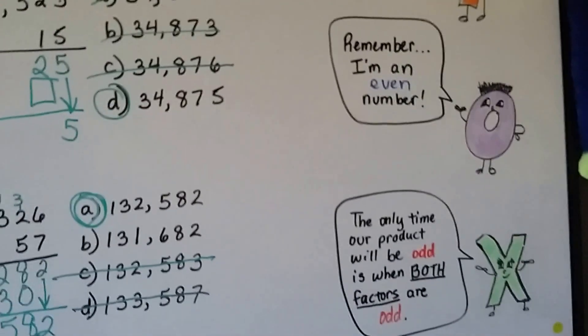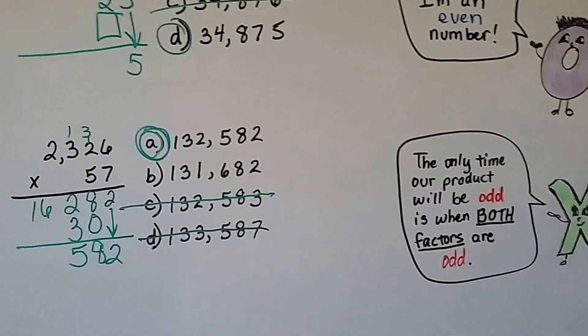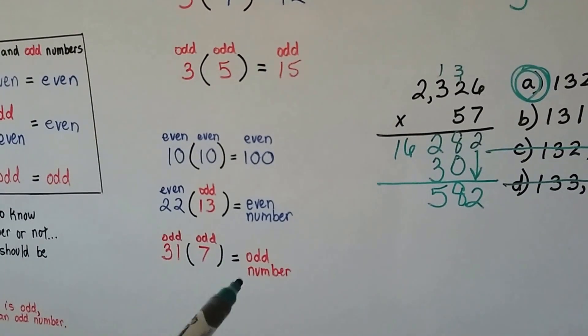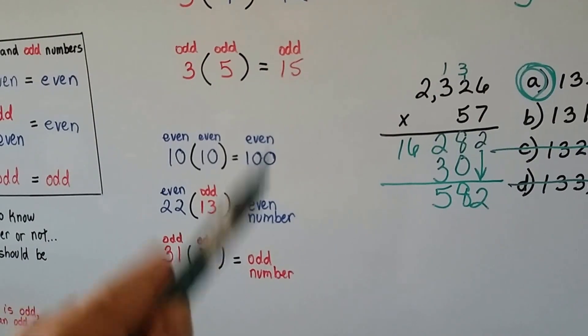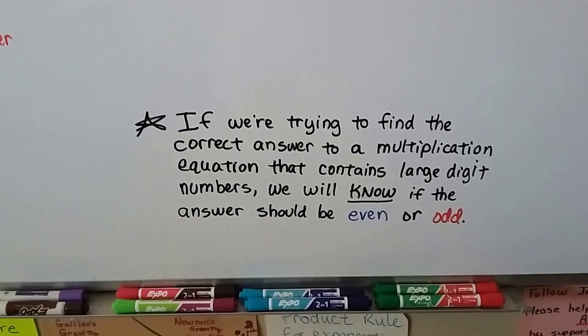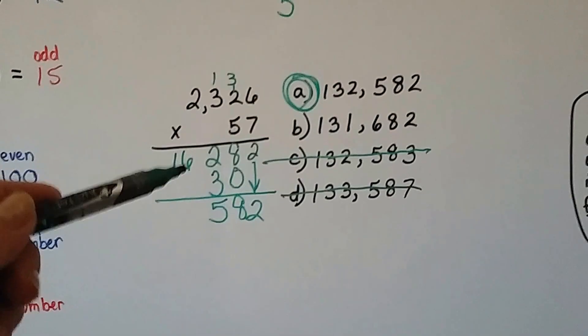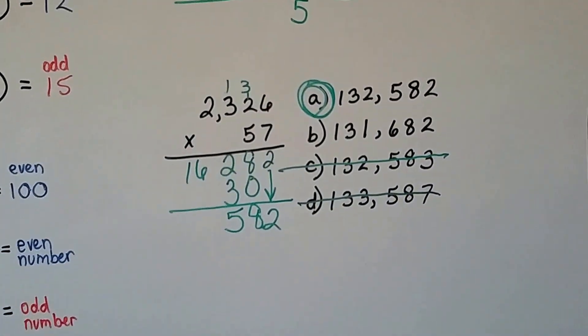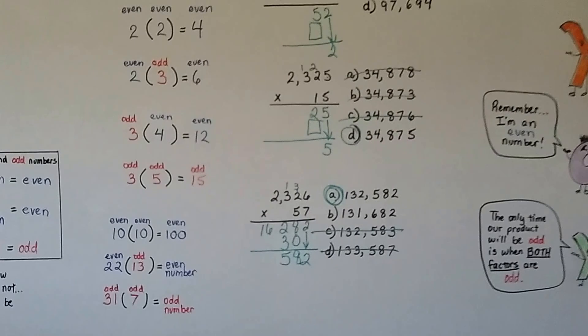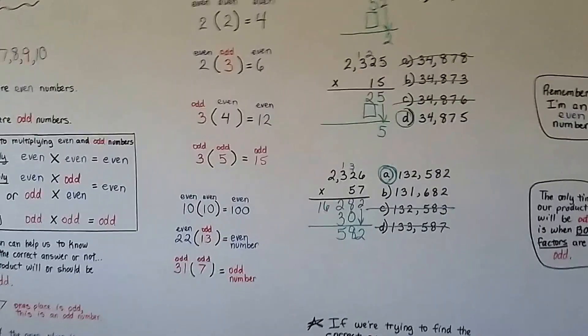So just remember that zero is an even number, and the only time our product will be odd is when both factors are odd. Otherwise, the other combinations, it's going to be even. And if we're trying to find the correct answer to a multiplication equation that contains large digit numbers, we'll know if the answer should be even or odd. Even if you complete it, you'll know if you've got it right or not, because you'll know which ones it can't be. Sometimes it might have three odd ones, and you know the answer is even. You can just answer it and go to the next question. Save yourself some time.